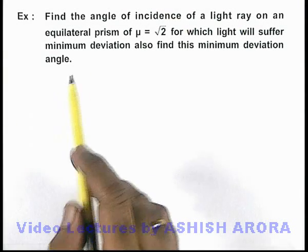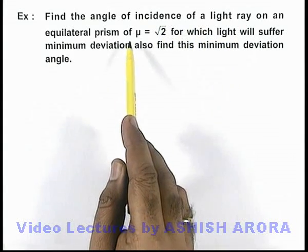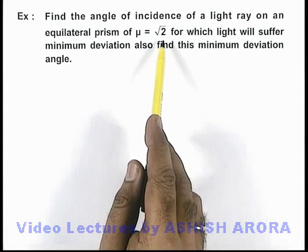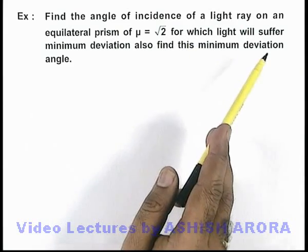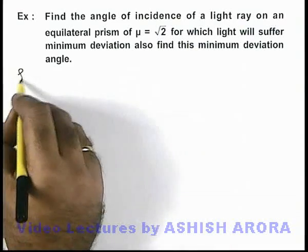In this example we are required to find the angle of incidence of a light ray on an equilateral prism of refractive index root 2, for which the light will suffer minimum deviation. We are also required to find this minimum deviation angle.